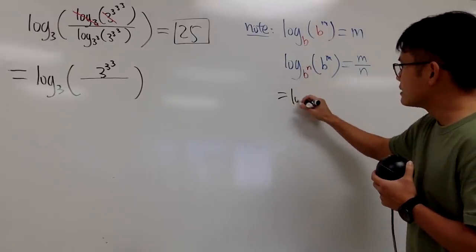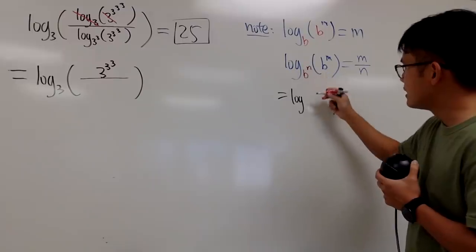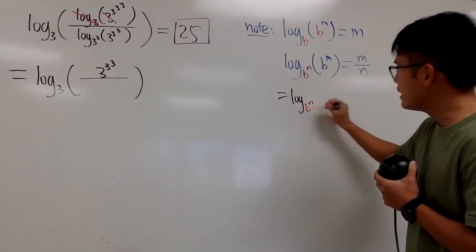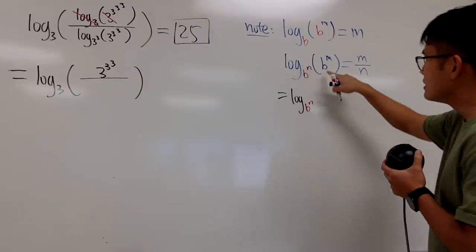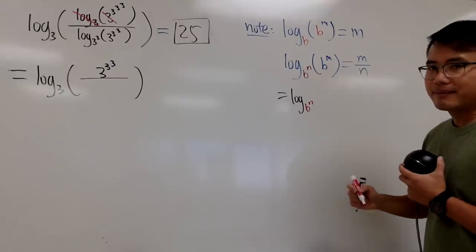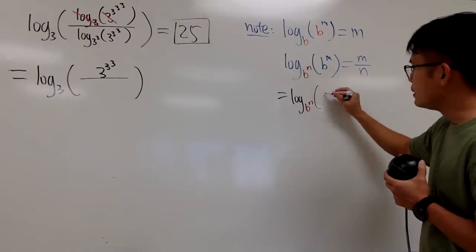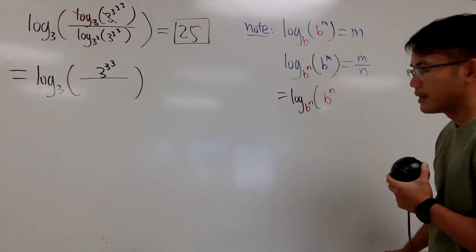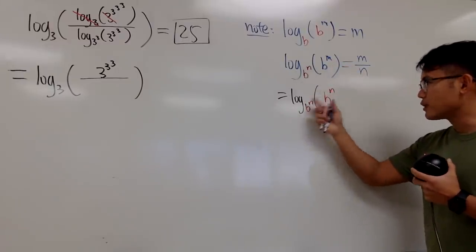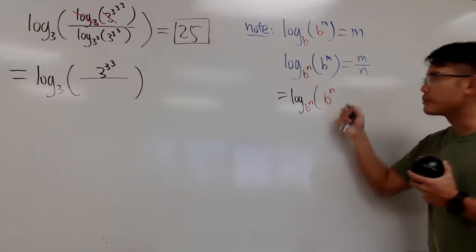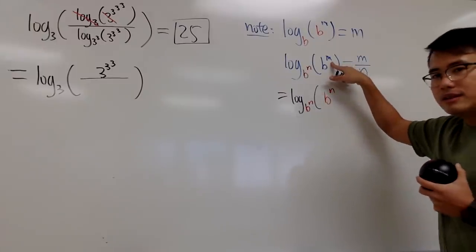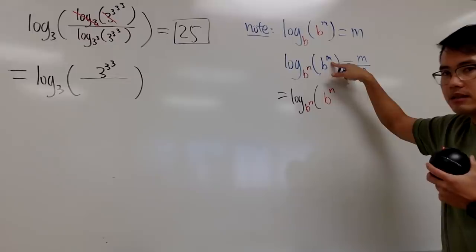I can write this down as log, I will still keep this as the base, b to the n like this. But instead of b to the m inside, I will show you guys. I will purposely write this as b to the n, because I want this to happen so that they can cancel it out. But the problem is, well, this is actually m, not n. So what can we do?